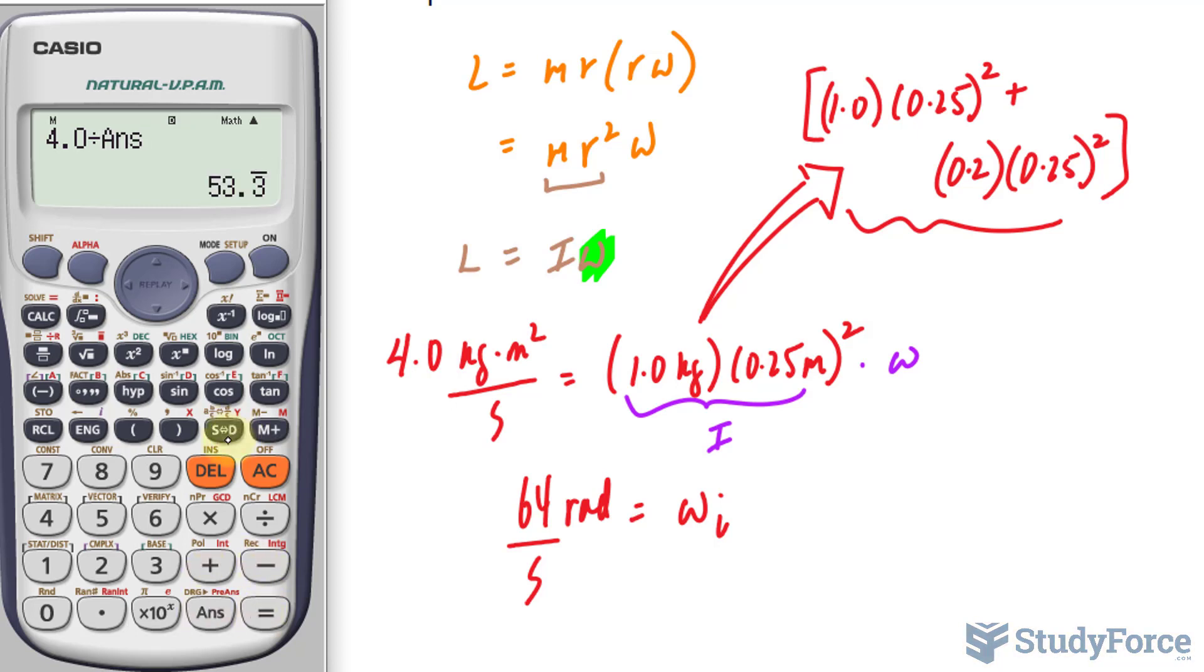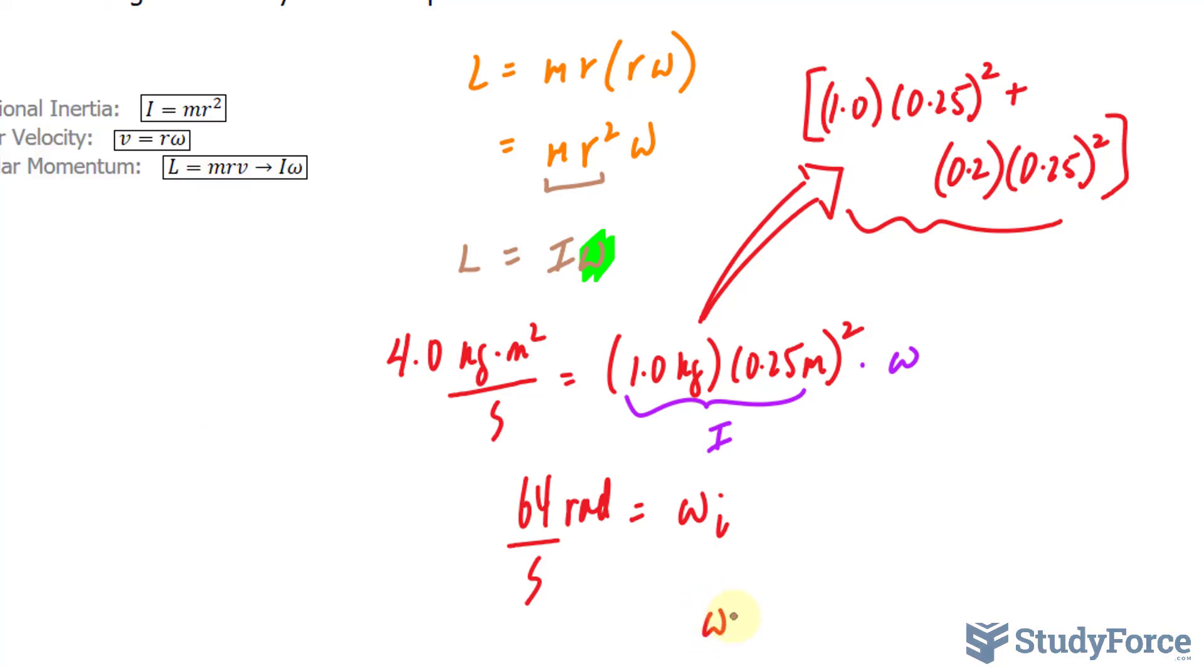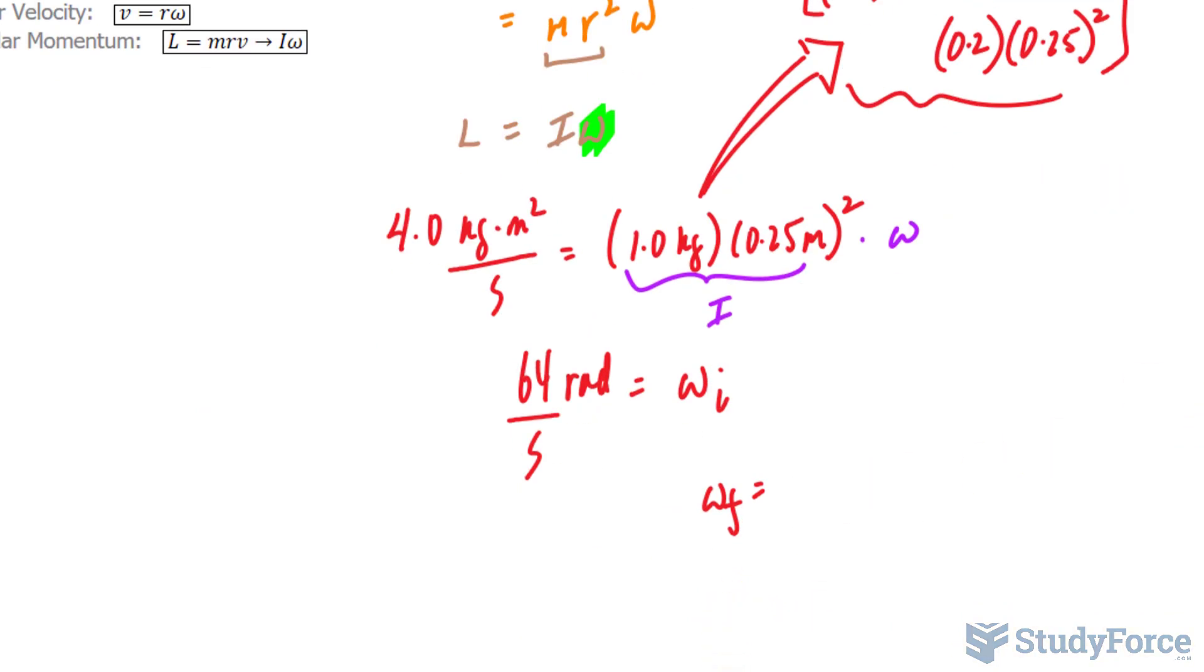And we end up with a new omega, which we'll call omega final, and that happens to be 53 radians per second.